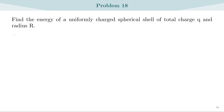Problem 18: Find the energy of a uniformly charged spherical shell of total charge Q and radius R. We can solve this problem in two methods. In the first method, we use the equation for work done involving the surface charge density sigma and the potential V. In the second method, we use the expression containing only the electric field E.